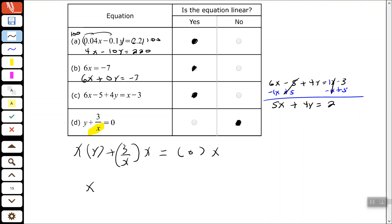So, I end up with x times y and then plus the x is cancelled here, 3 equals 0. So, again, right here, in this form, you see that we have x times y. We have two variables being multiplied together, which again tells me that that is not linear.